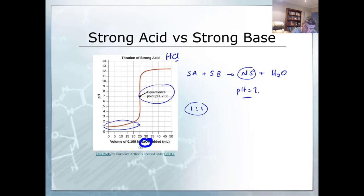And then the change is very rapid. You can see here from around about 20 mils to 30 mils, so only 10 mils of our base solution, we have a massive rise in pH going from about 2 at this point to 12 at this point.